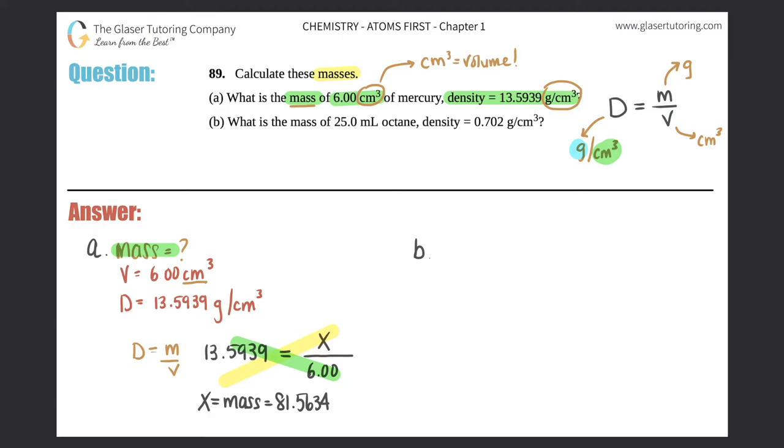We get 13.5939 times 6, we get 81.5634. But we need to incorporate the correct number of sig figs. We're multiplying here, so we take the lowest total. In this whole number there are six sig figs, and for 6.00 there's three sig figs. So your answer needs three sig figs. Your mass would be 81.6 grams. Box that answer off, that's your answer for part A.